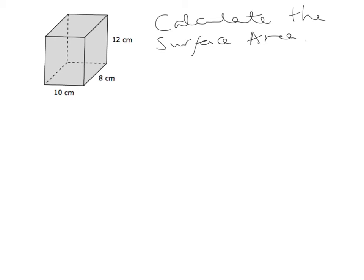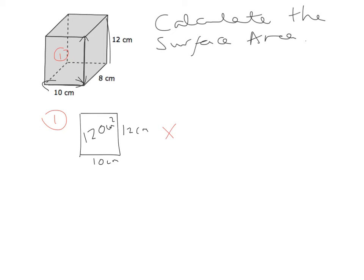The first rectangle I'm going to focus on is the one at the front of the shape — rectangle number 1. Sketching it out, its length is 10 centimetres and its height is 12 centimetres. So the area is 10 multiplied by 12, which gives 120 centimetres squared. That rectangle at the front is the same as the one at the back, so times by 2 gives 240 centimetres squared.